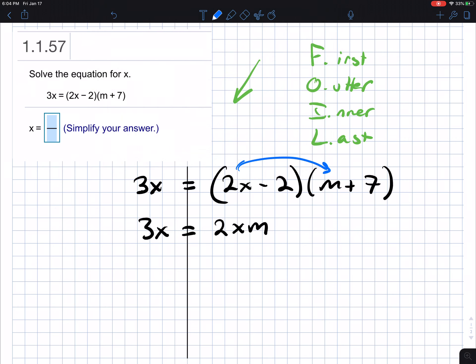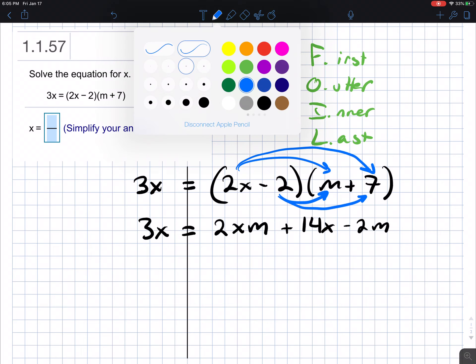Outer times outer, so this times this. 2x times 7 is just going to be 14x. Inner times inner, so that's these two. That's going to be a negative 2m. And the last times the last, that's going to be negative 14.